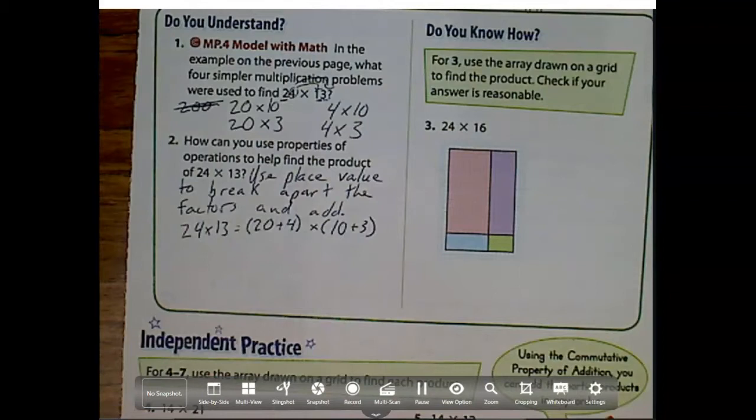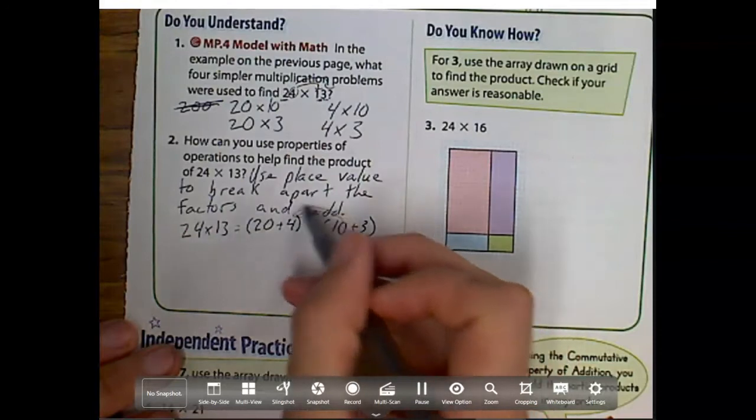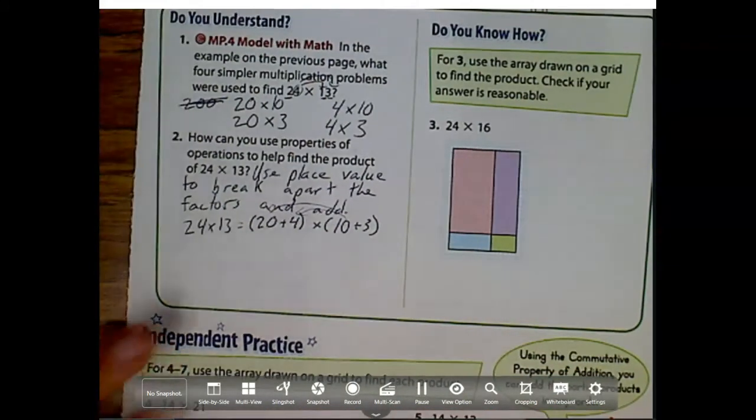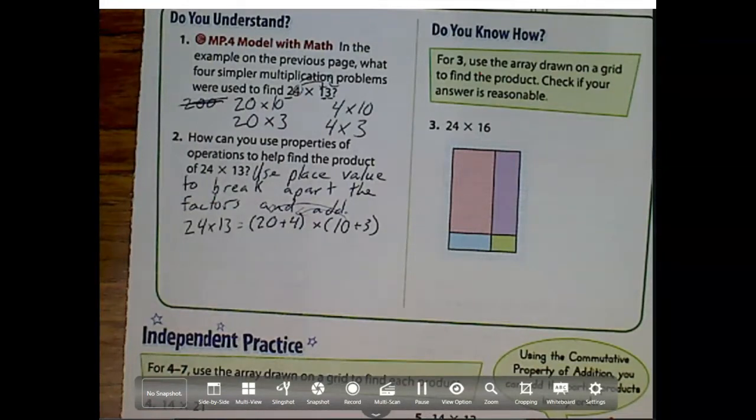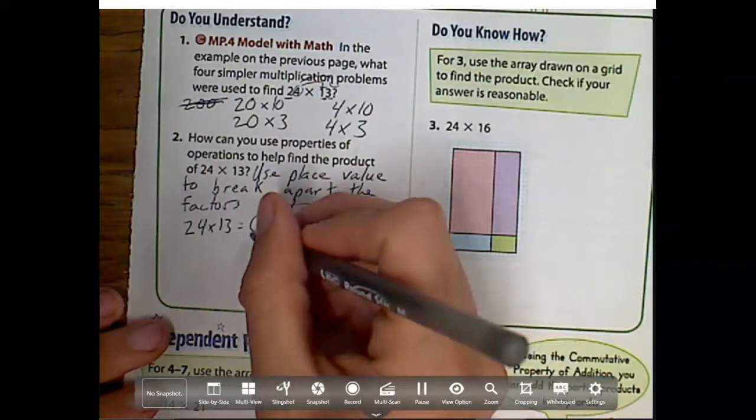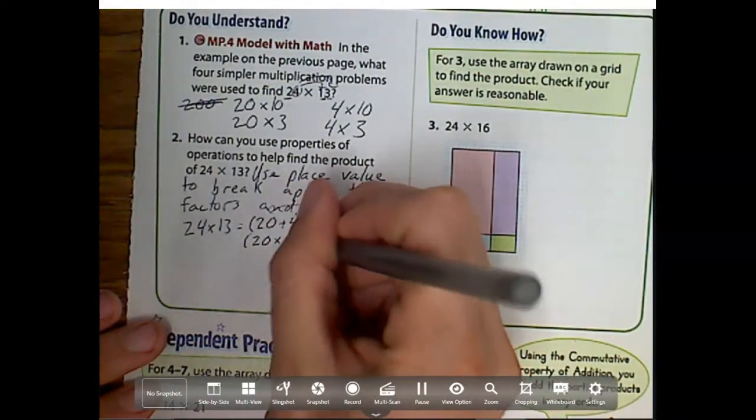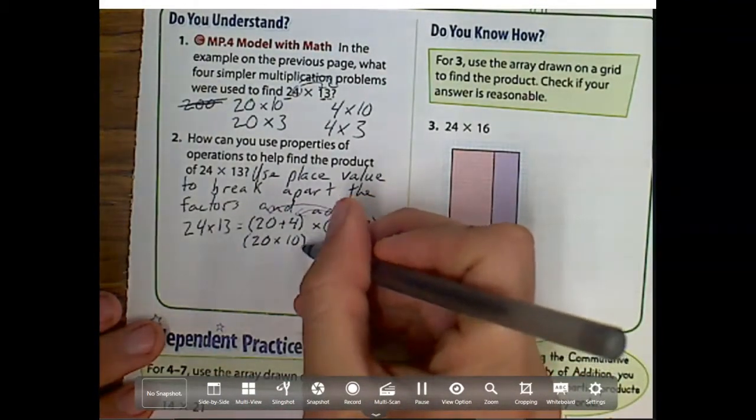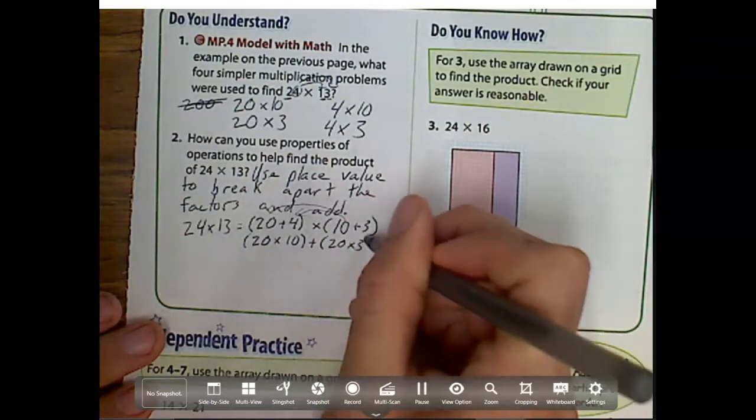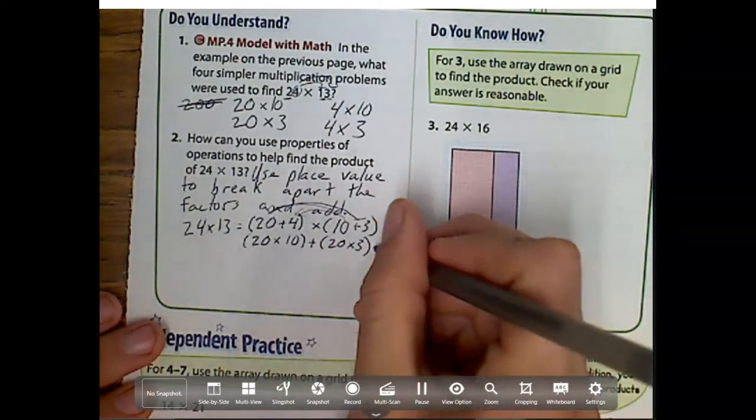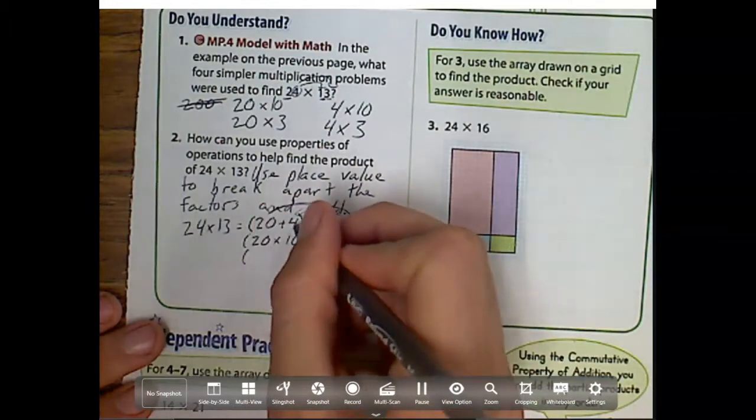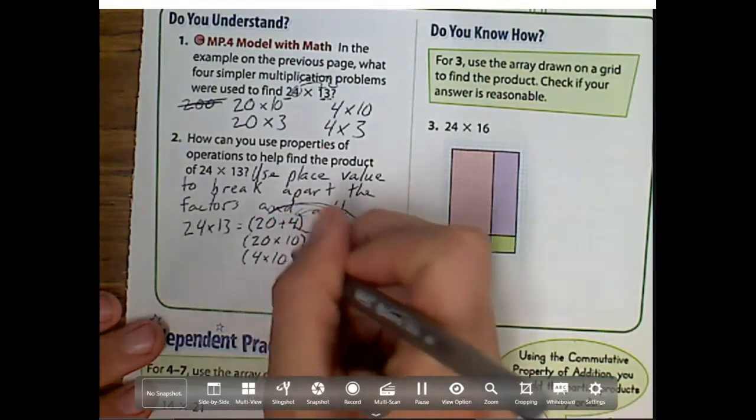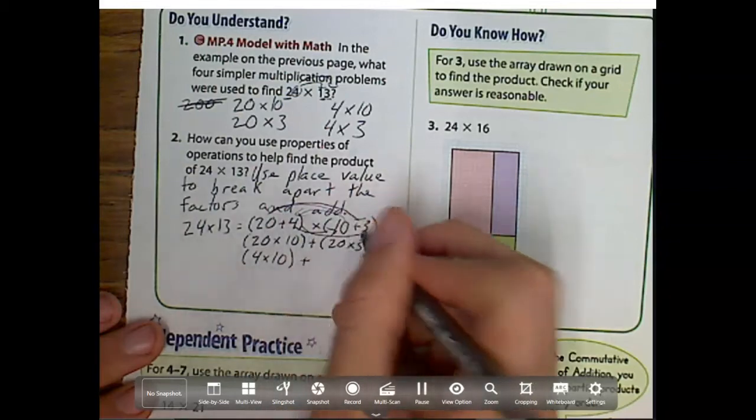So notice it's the exact same. And now what I'm going to do is, I'm going to distribute this 10 to everything inside, and I'm also going to distribute that 3 to everything inside. So what do we have here? Well, we would have 20 times 10, and I can also distribute that 20 to everything that way as well. Plus 20 times 3. So notice I'm distributing it. Plus, now I distribute that 4, 4 times 10, plus 4 times 3.